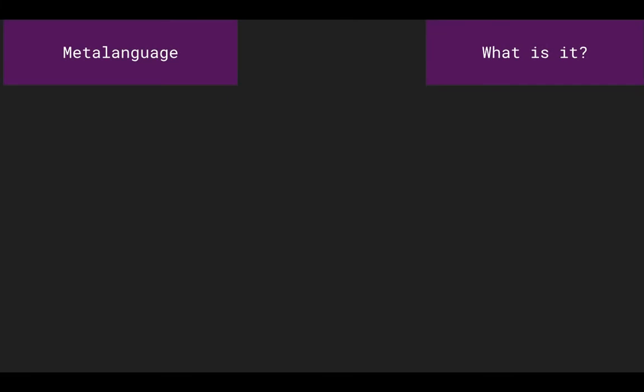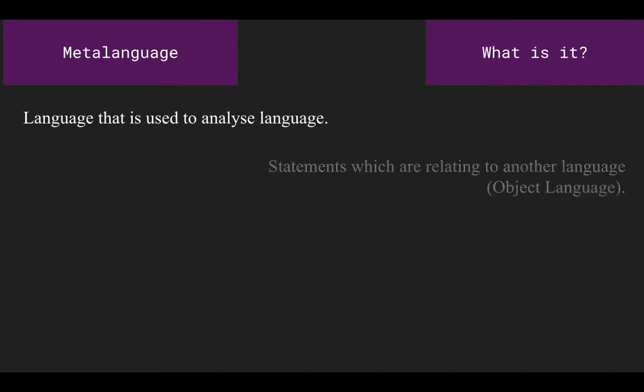What is a meta-language? The basic meaning of a meta-language is language that is used to analyze language. From a programming language's perspective, it is used to have a statement made regarding other statements made in another language, which is known as an object language.